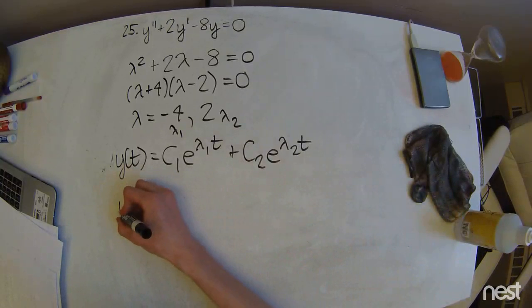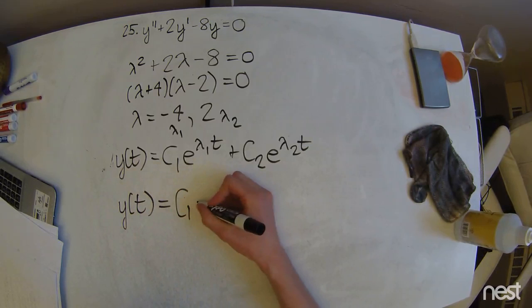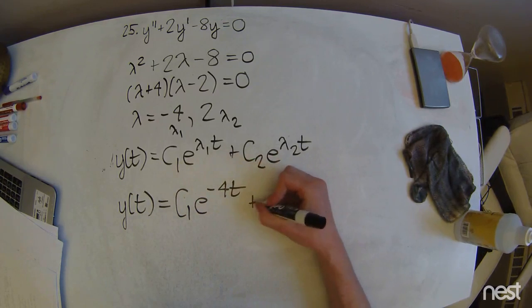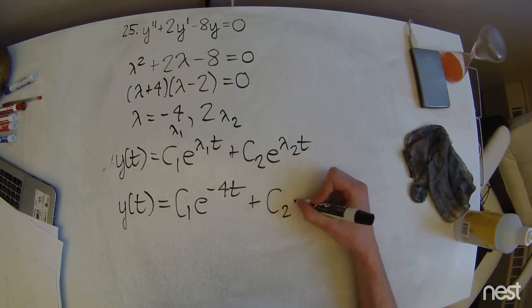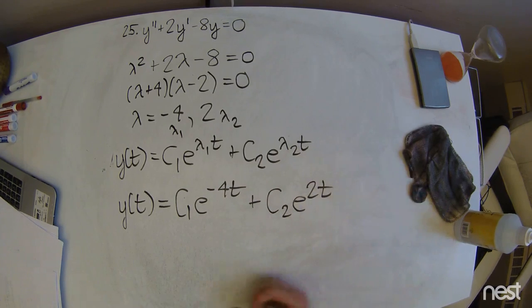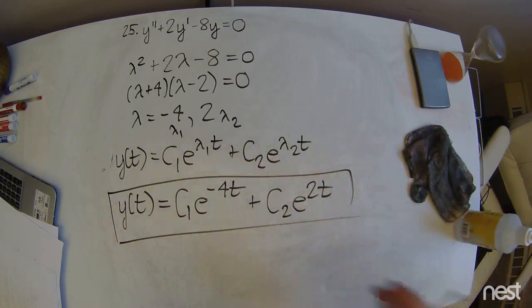And that's going to give us our solution, which is y of t equals c1 e to the negative 4t plus c2 e to the 2t. And that is our solution.